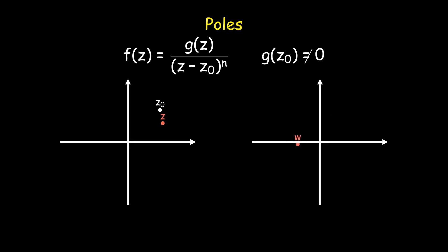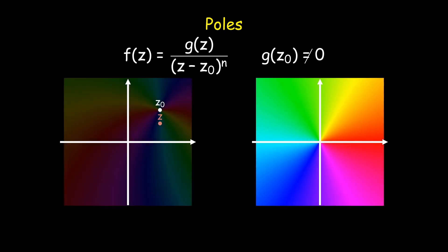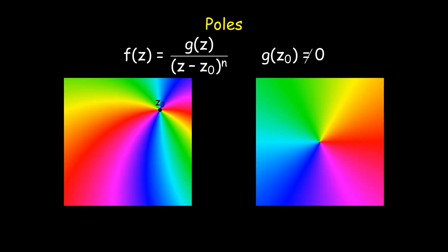If z orbits z₀ in a small circle, then the function value w orbits n times around the origin, but in the opposite direction. In the phase portrait, therefore, all colors meet n times, but their order is reversed, as can be observed on the color map.